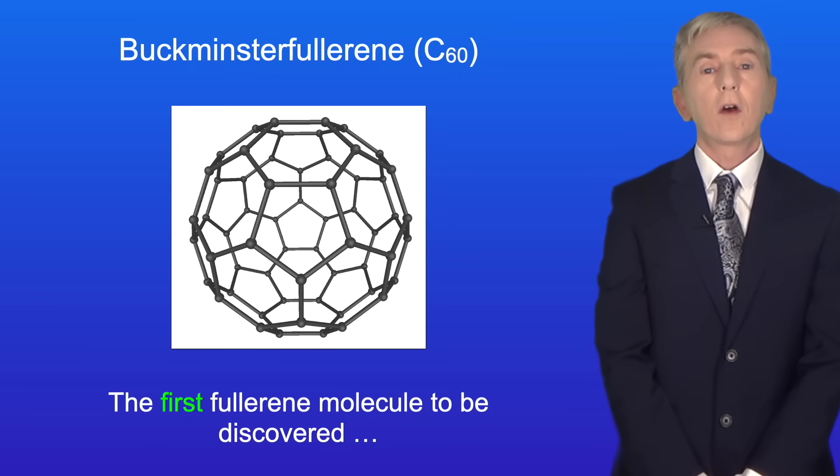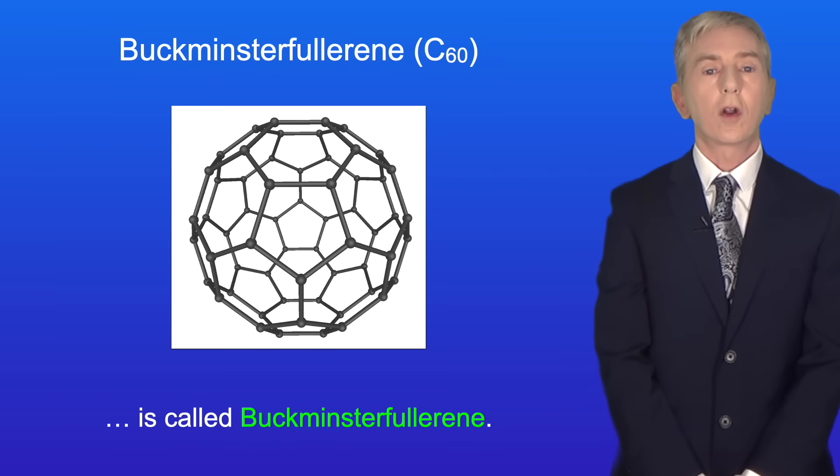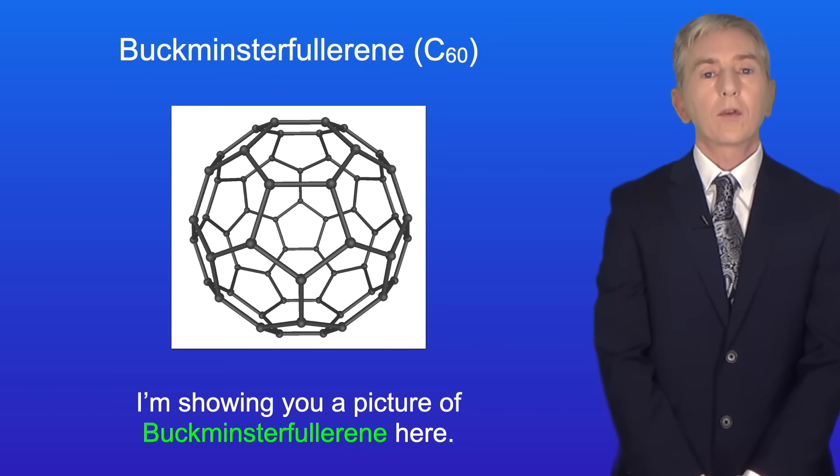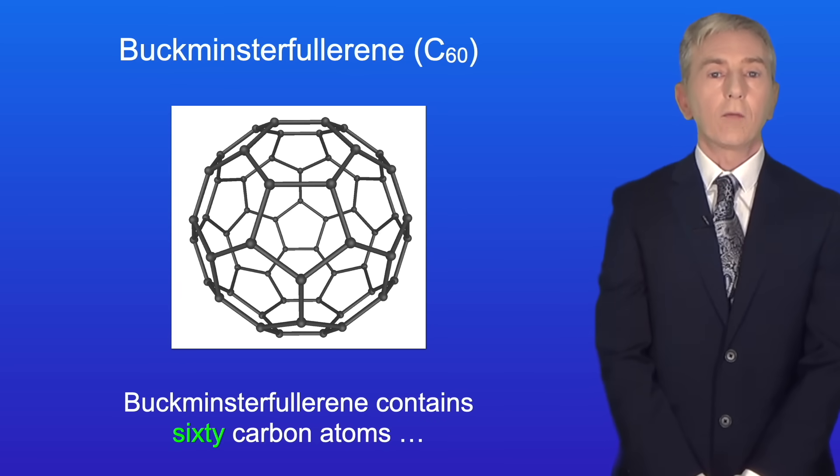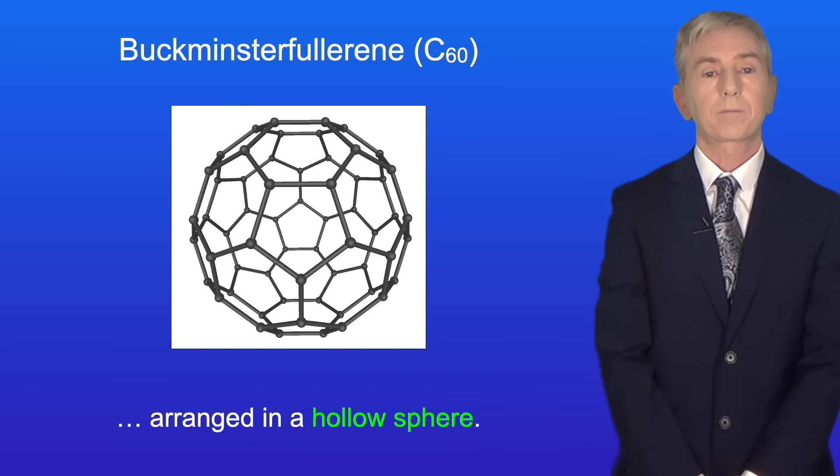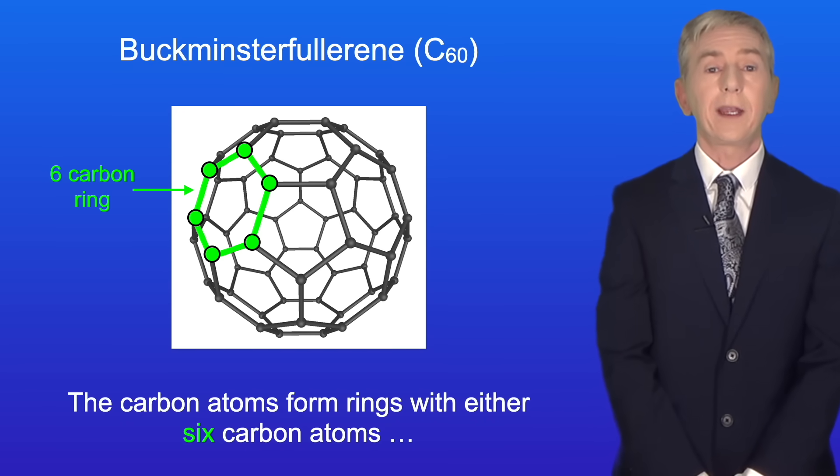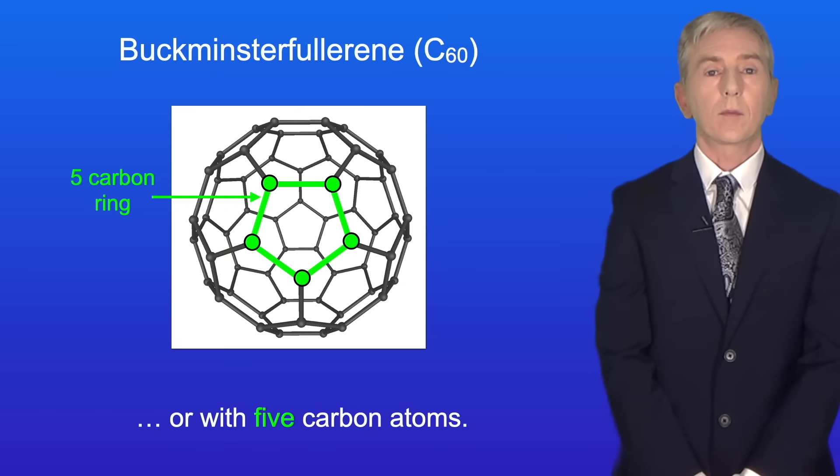Now the first fullerene molecule to be discovered is called Buckminsterfullerene and I'm showing you a picture of Buckminsterfullerene here. Buckminsterfullerene contains 60 carbon atoms arranged in a hollow sphere. The carbon atoms form rings with either six carbon atoms or with five carbon atoms.